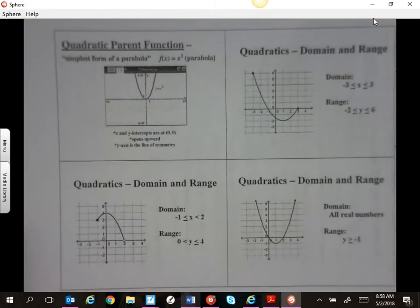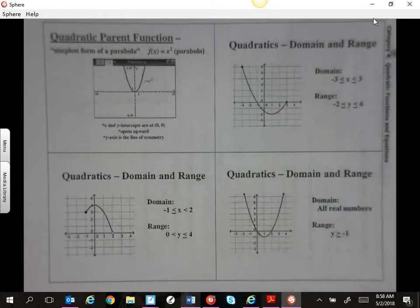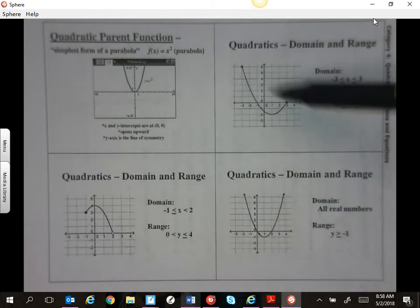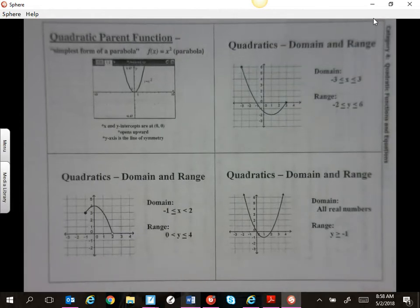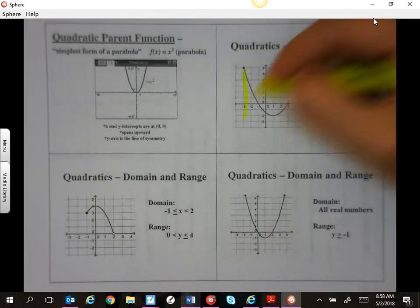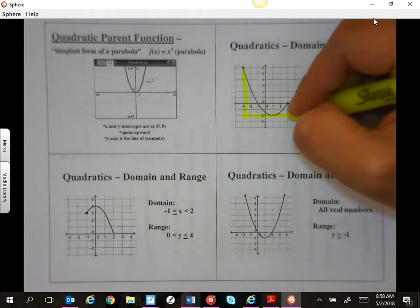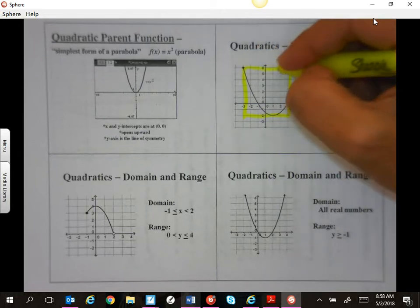Okay, so this is domain and range. Remember, we've already talked about this one. Domain and range, if there are solid dots that is going to be or equal to. Don't forget to draw your window. Use a highlighter if you prefer, so that you can see what's going on.